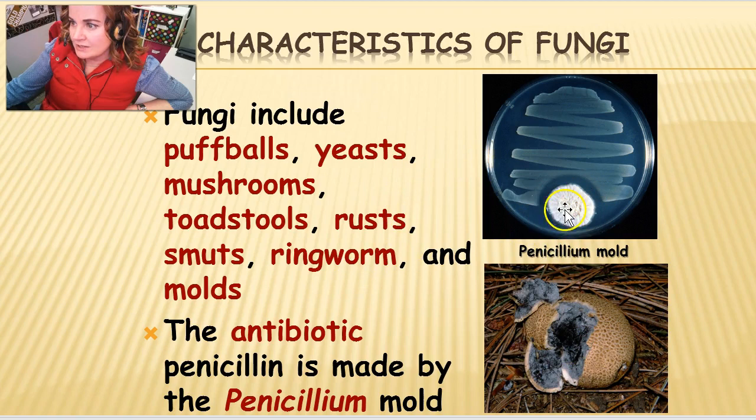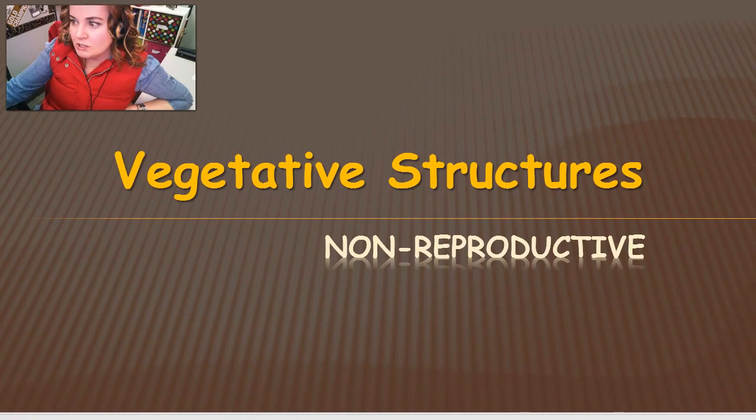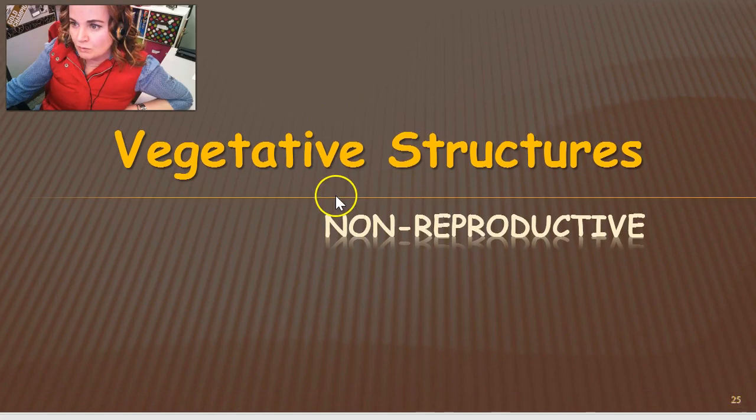The antibiotic penicillin is made from Penicillium mold. Here's a picture of a puffball, and here's some Penicillium mold on a petri plate. Notice there is a zone of inhibition all around the Penicillium mold where the bacteria can't grow, because that area is toxic to them — which tells us it works really well.